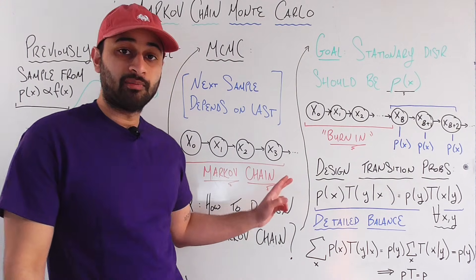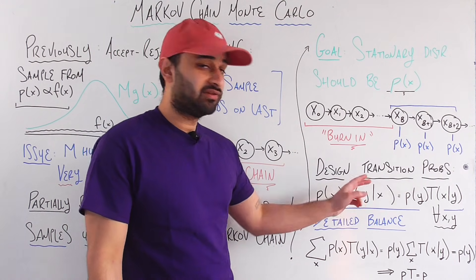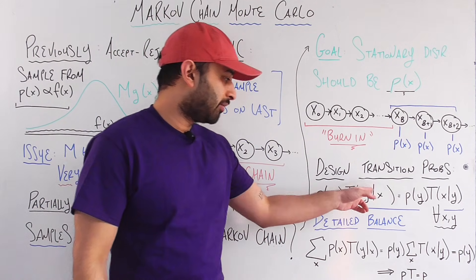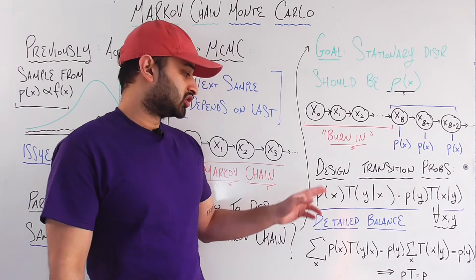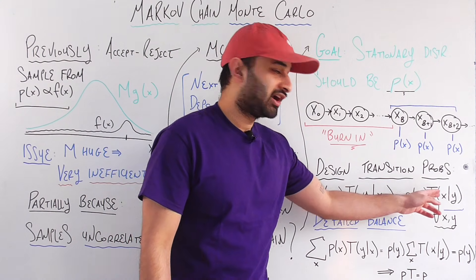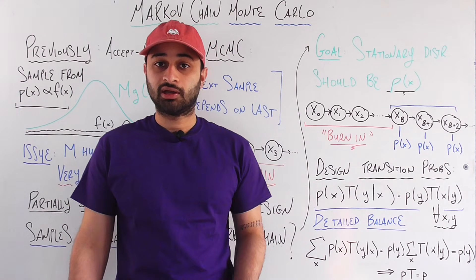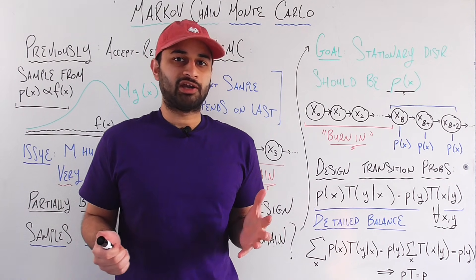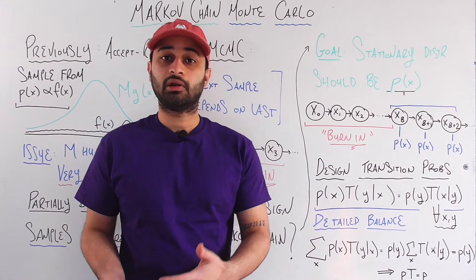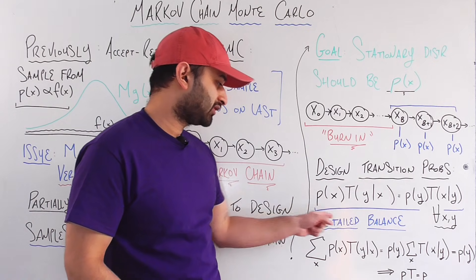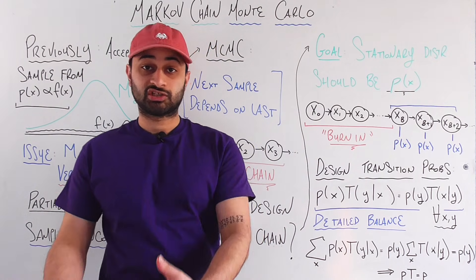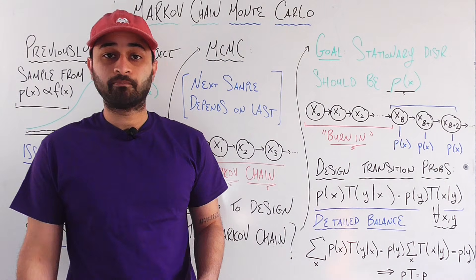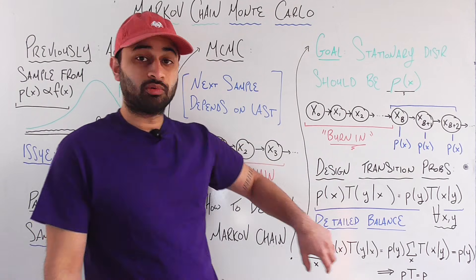If this detailed balance condition is true, then it shows that this distribution p of x is indeed a stationary distribution of the Markov chain. And the detailed balance condition says that for any states x and y, so x and y here are just any two numbers on this line, so for any two pair of numbers on that line, we're going to say the detailed balance condition is p of x times t y given x. T y given x is the transition probability from going from state x to state y. Another way to say that is if I'm at state x, what's the probability of going to state y next? So p of x times that is equal to p of y times t of x given y. So you can see the left and right hand sides are symmetric, it's just swapping where x and y are. And this is called the detailed balance condition.